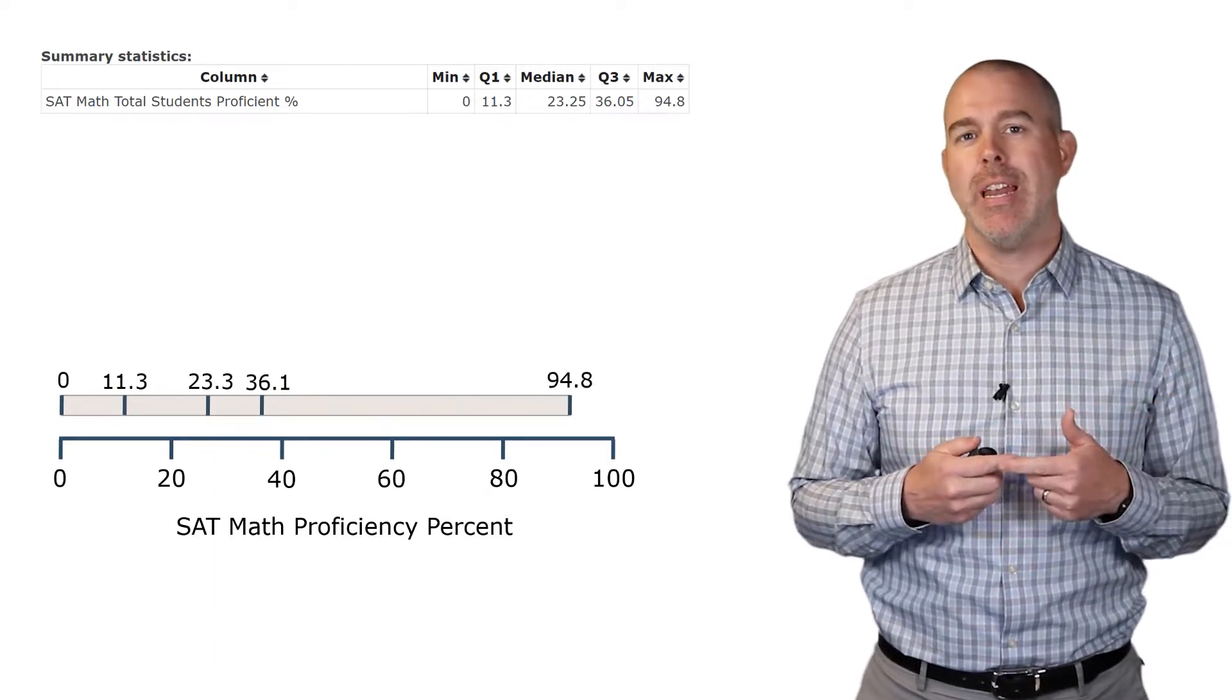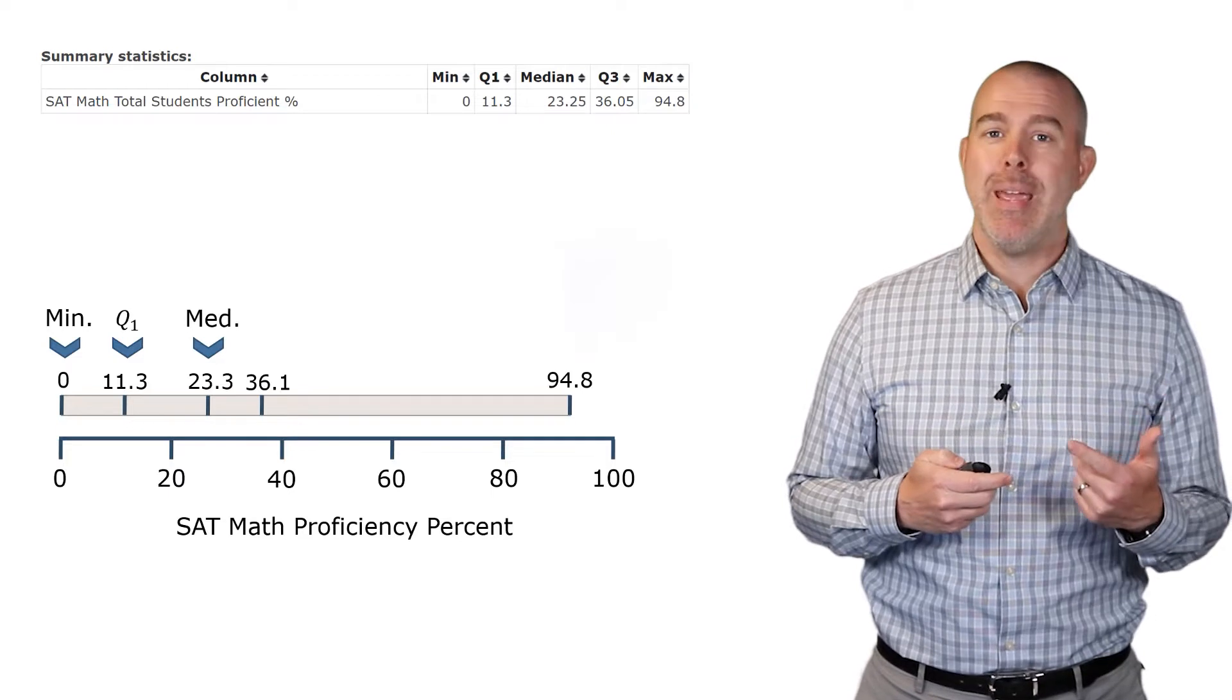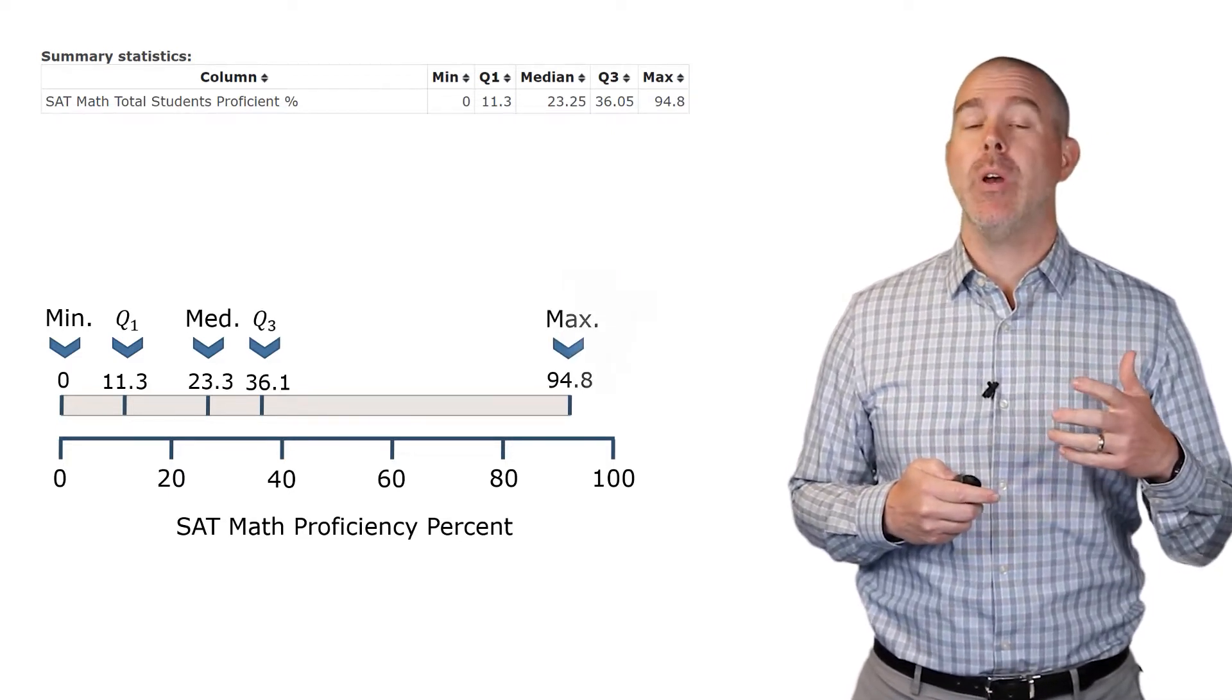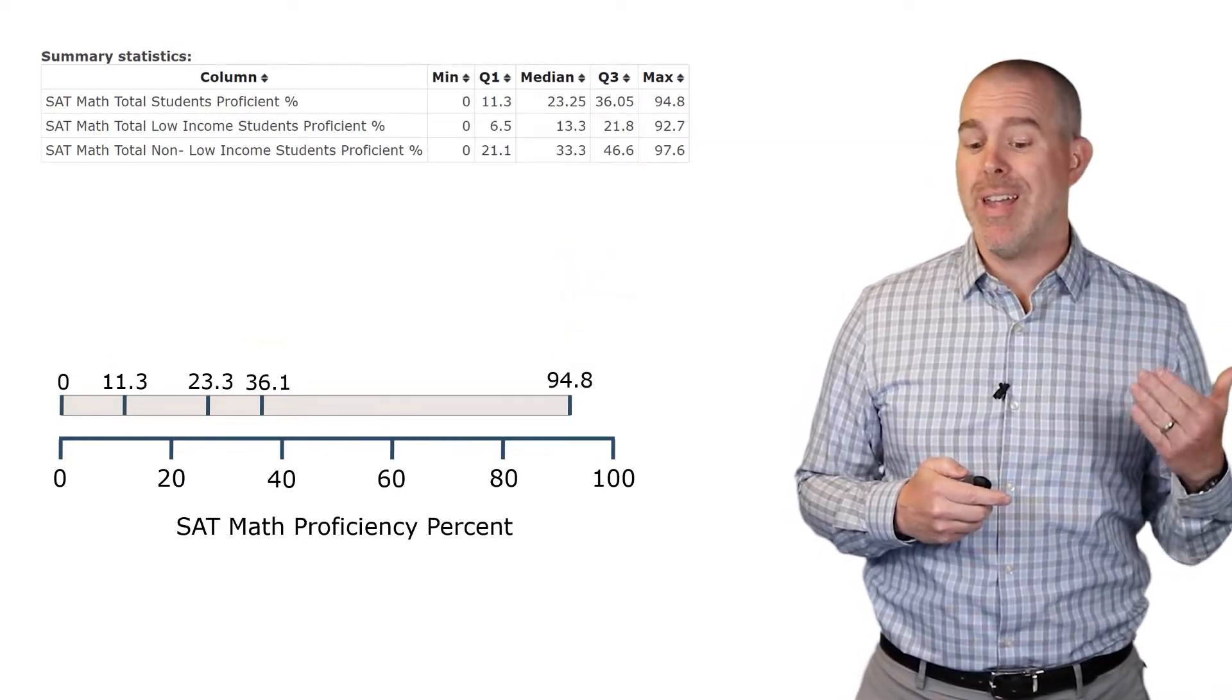Previously we've calculated the minimum, Q1 quartile one, the median, third quartile, and maximum. We also broke these down into the percent proficient among those who are low income and those who are not low income.